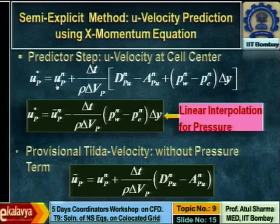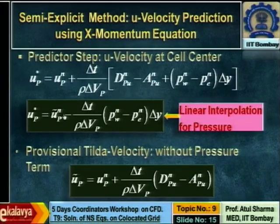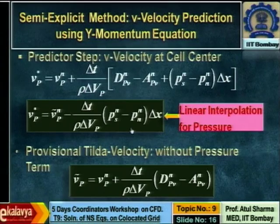When we predict the star velocity, we break it into two terms — the non-pressure term (tilde velocity) and the pressure component. We use this tilde velocity later in momentum interpolation. In staggered grid we only had the star velocity with no tilde velocity. Here we split the expression into a non-pressure term and a pressure term. We do the same for v velocity. So in two steps we have predicted u-star as well as obtained u-tilde and v-tilde.